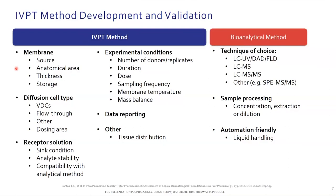Key aspects to consider include: membrane or skin source, the diffusion cell type, receptor solution, a range of experimental conditions, how you report your data, and some other aspects from the innovator perspective in terms of tissue distribution. Developing a bioanalytical method is not trivial either — you need proper equipment, someone well trained in those techniques, sample processing, and in certain cases, depending on throughput, you may also need to consider automation.